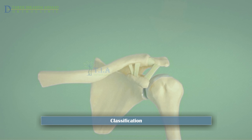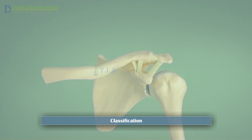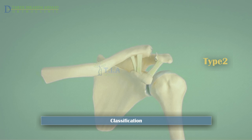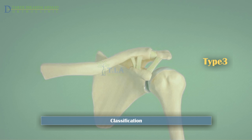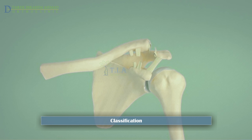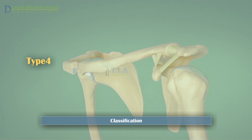Classification. The position of the clavicle and the amount of separation are used to grade the severity of the injury. Type 1 AC injuries occur when the acromioclavicular ligament is stretched and partially torn; the acromioclavicular joint remains stable. Type 2 AC injuries occur when the acromioclavicular ligament is completely torn and the elevation of the clavicle is more evident on x-rays. Type 3 AC injuries occur when the acromioclavicular ligament and coracoclavicular ligaments are completely torn; the clavicle is 100% displaced from the acromion.